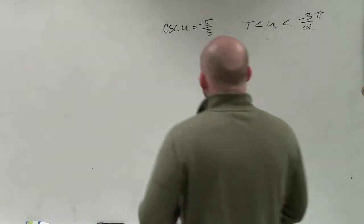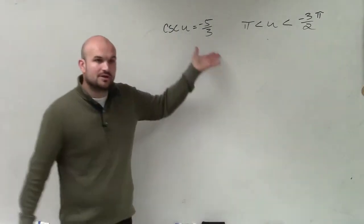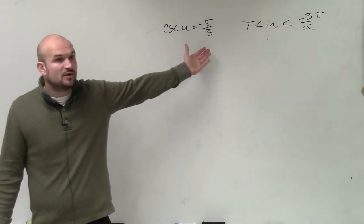Or at least check your answer. So on this problem, first of all, we look at our cosecant and we determine, is this a point that's on the unit circle?